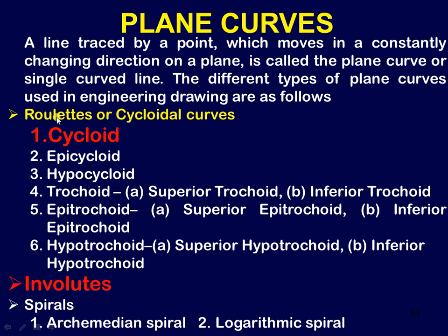The roulettes are cycloidal curves. They are cycloid, epicycloid, hypocycloid, trochoid, epitrochoid, and hypotrochoid.